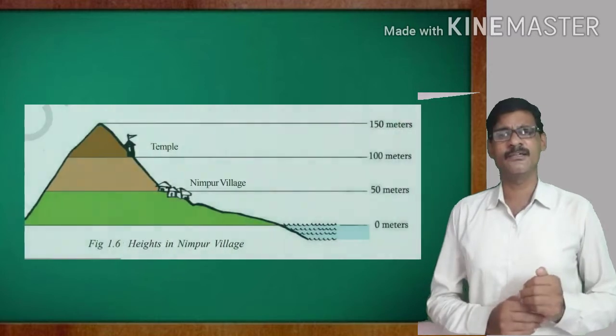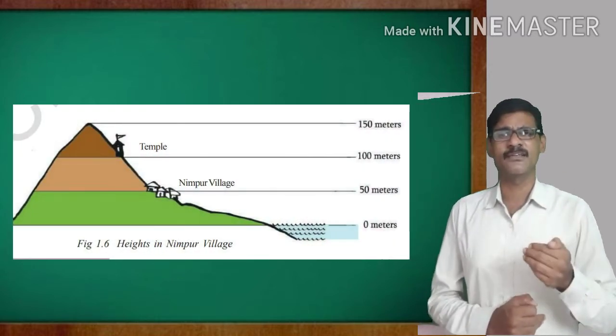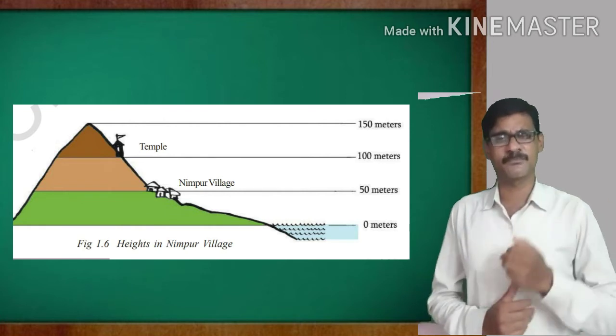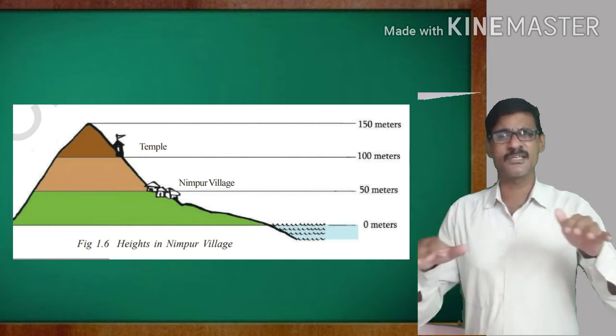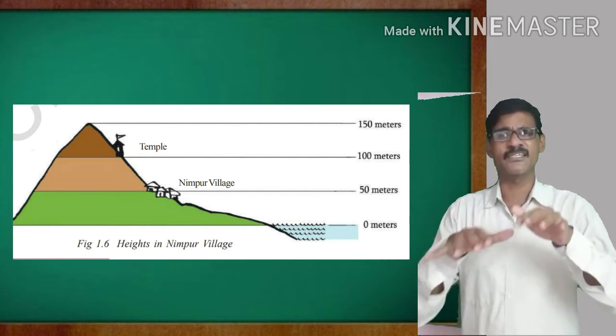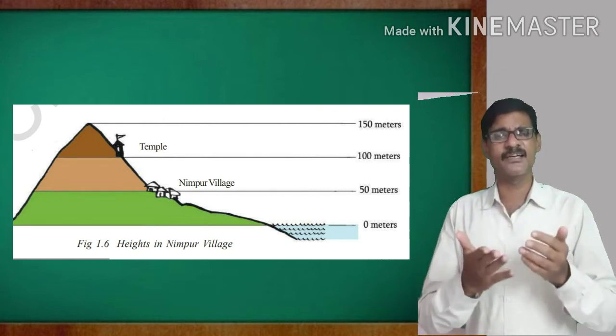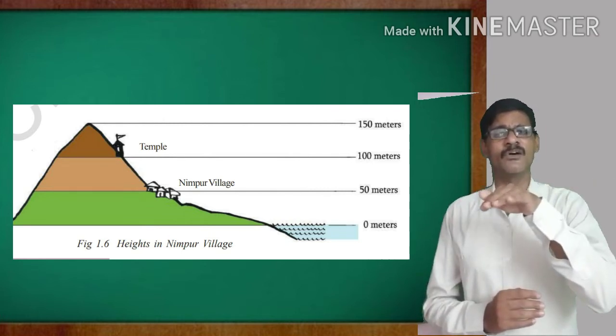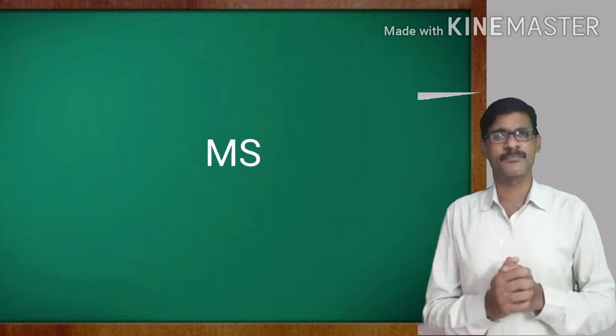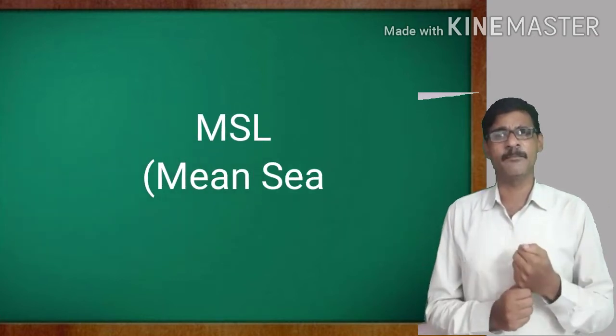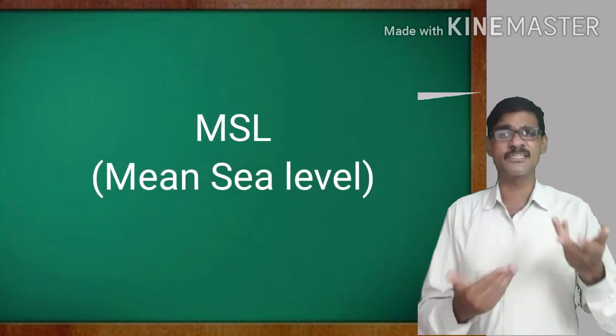Measuring height on the maps. We can measure the height from the sea level on the maps. Generally, we know that all the seas or oceans on the earth surface are connected with each other. So, roughly we are estimating the sea level is same of all the water bodies on the earth surface. This is also called as MSL, mean sea level.